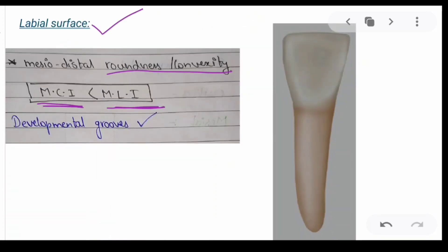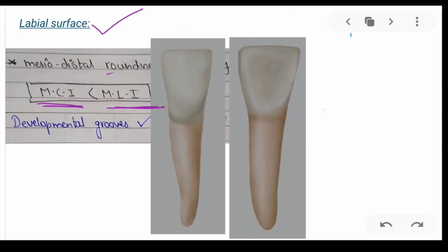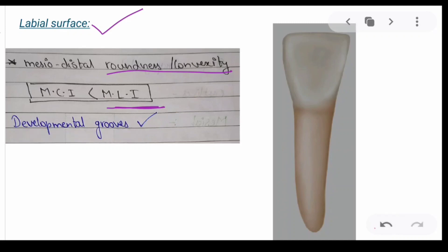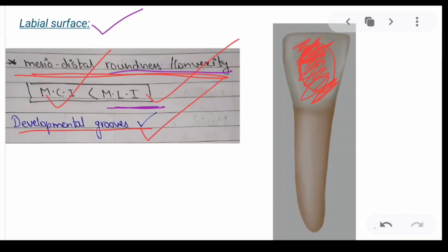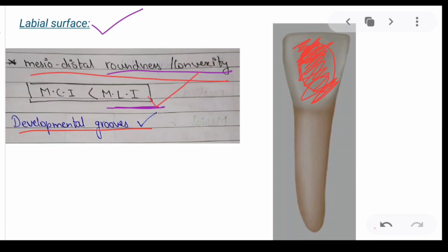Regarding mesodistal roundness or convexity: comparing the mandibular central incisor and the mandibular lateral incisor, the lateral incisor is more convex than the central incisor, which is straighter. So the mandibular lateral incisor has greater mesodistal roundness or convexity than the mandibular central incisor. We can also relate this to the mesodistal width, which is greater for the lateral incisor. Developmental grooves are also visible on the labial side.